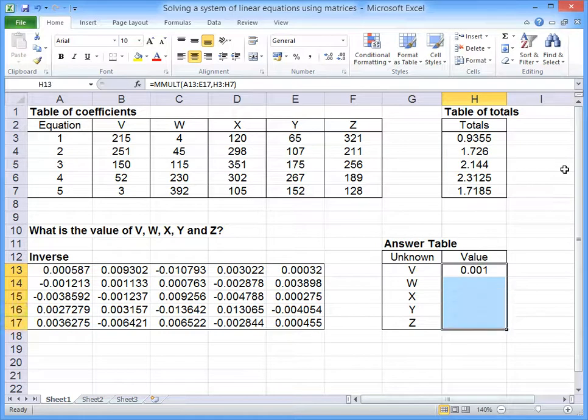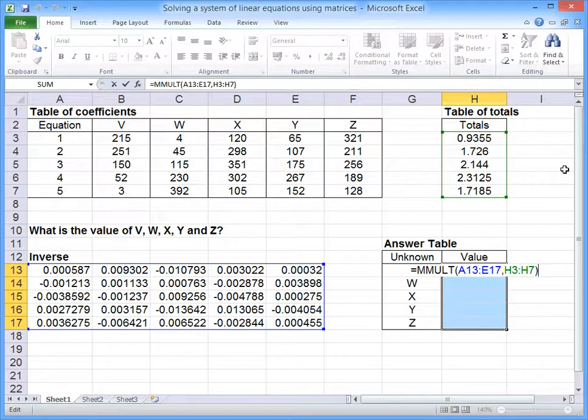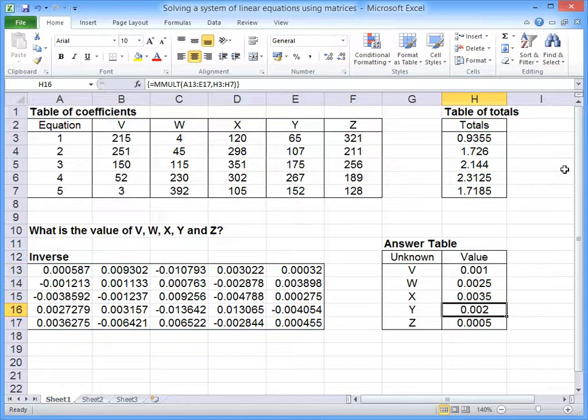Again, this is an array function, so we have to highlight the cells to which the values are going to be read out to. Press F2, Control, Shift, and Enter. And now we have a table, a matrix of values for the unknown values.